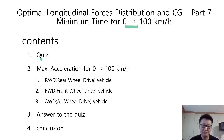The contents will be, as always, a quiz, and the maximum acceleration for 0 to 100 km per hour in the case of rear-wheel drive vehicle, front-wheel drive vehicle, and all-wheel drive vehicle. Then I will show you the answer to the quiz and the conclusion.